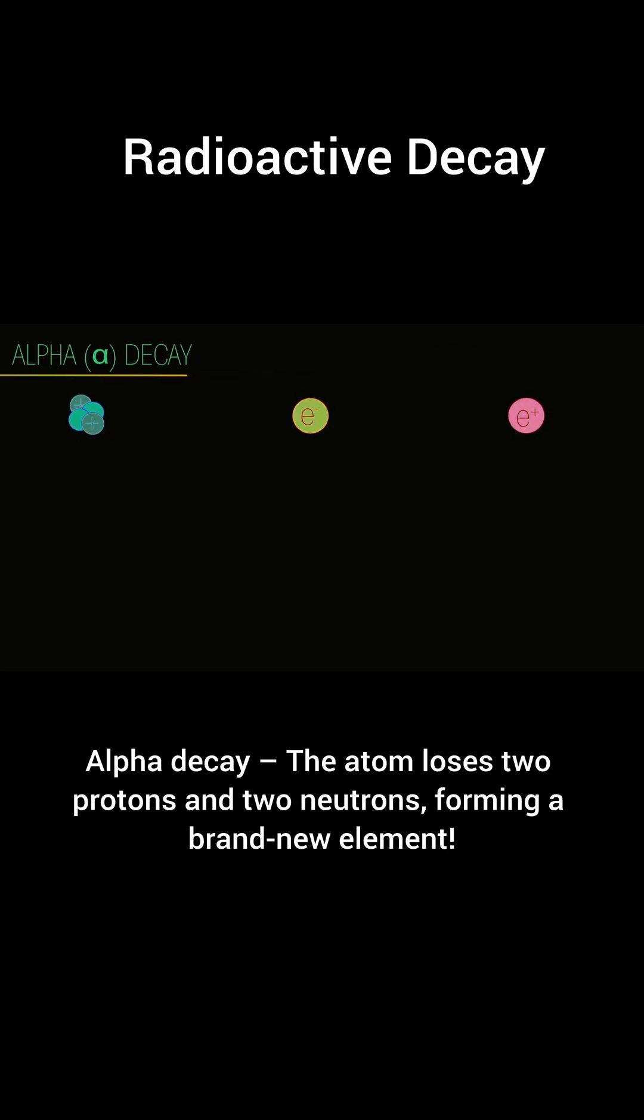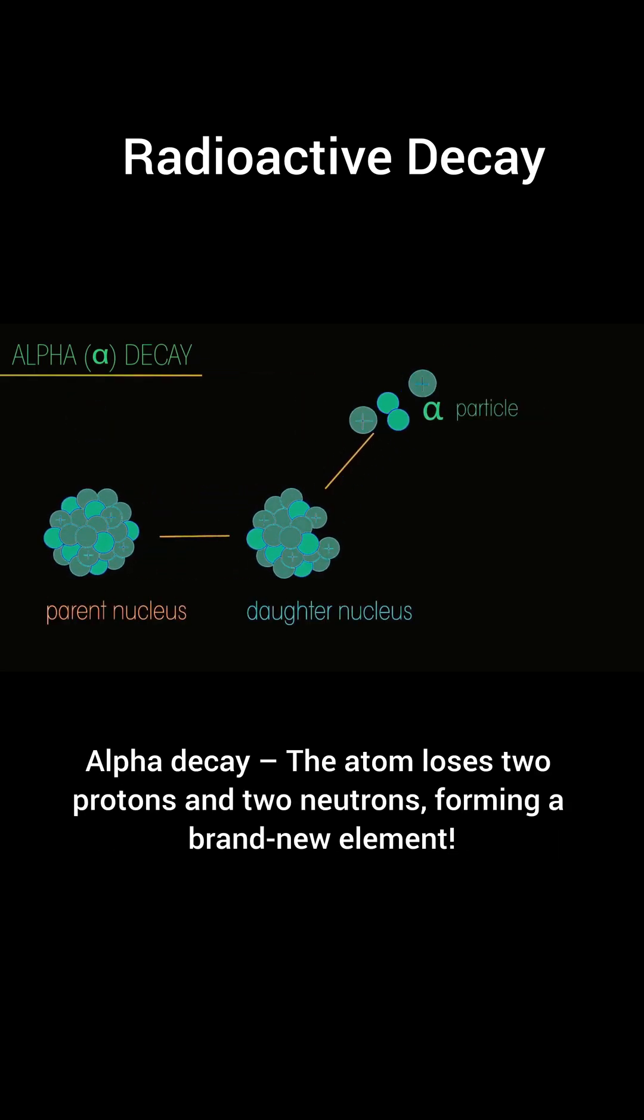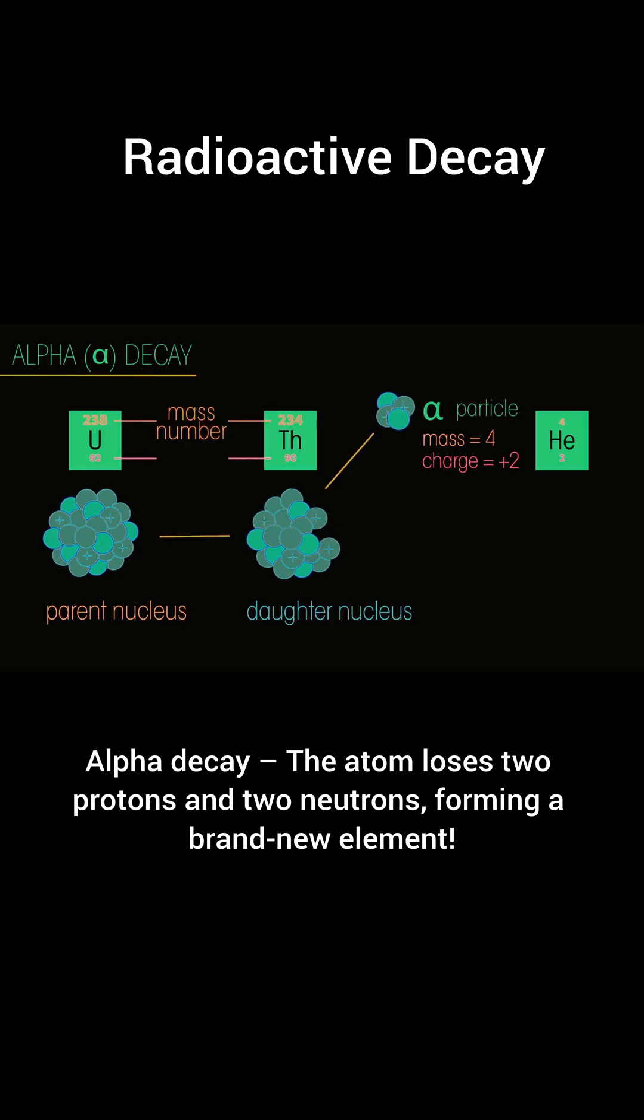There are three main types of decay. Alpha decay—the atom loses two protons and two neutrons, forming a brand new element.